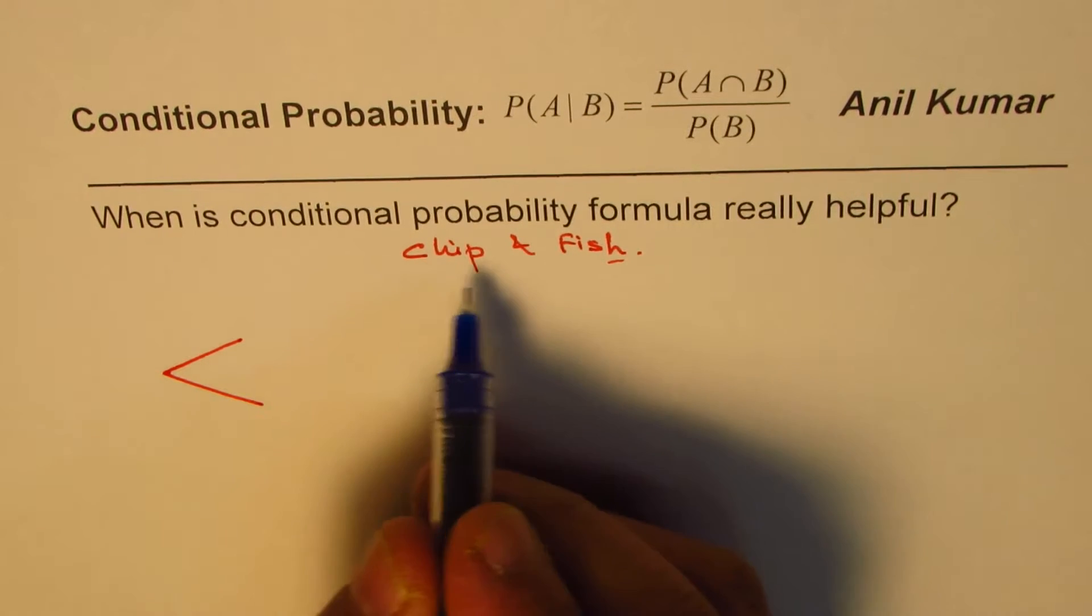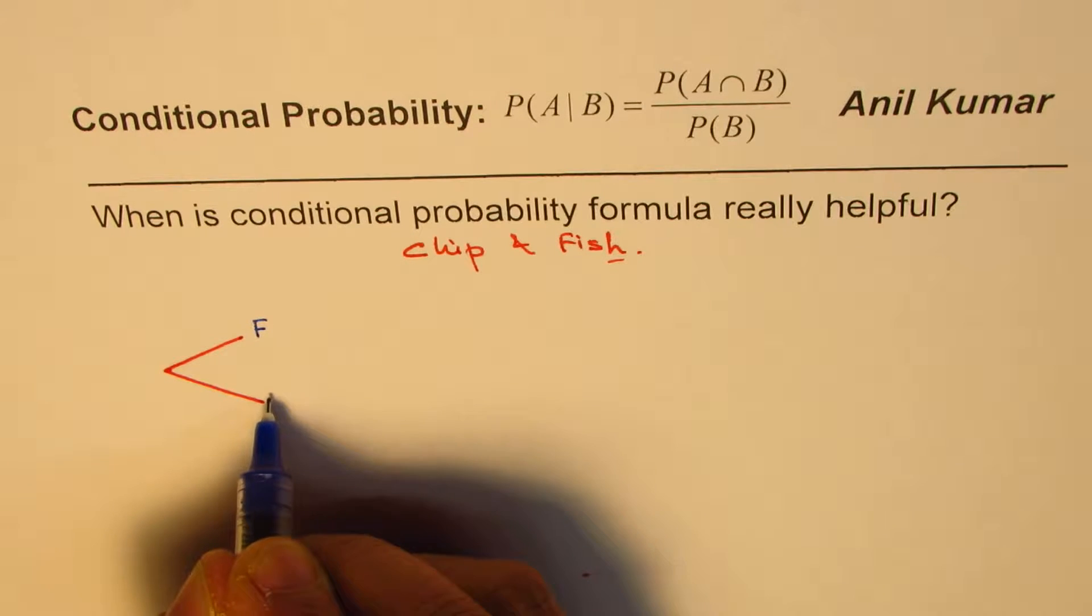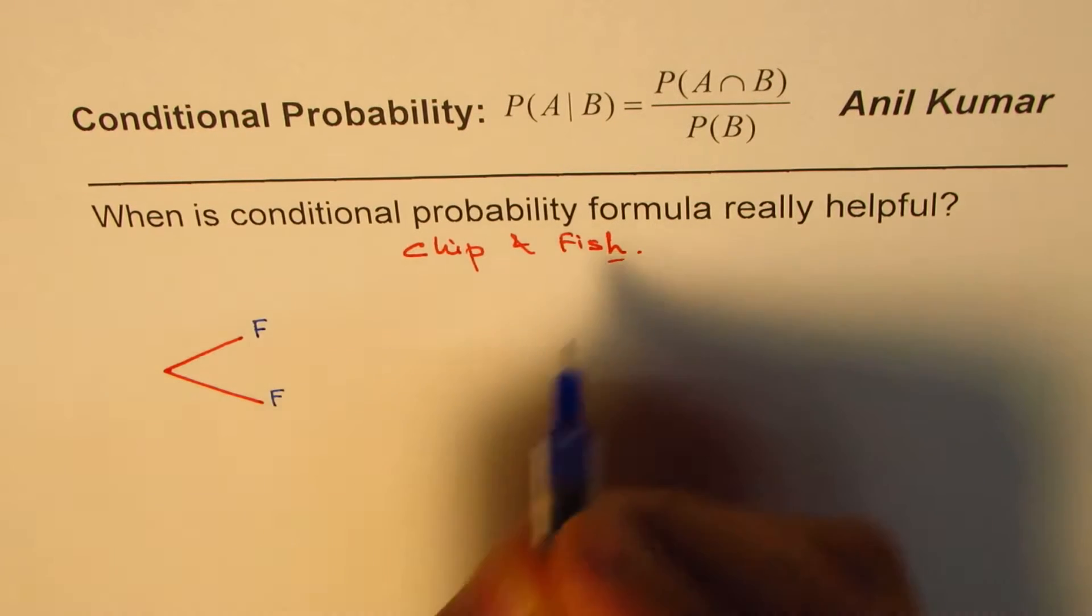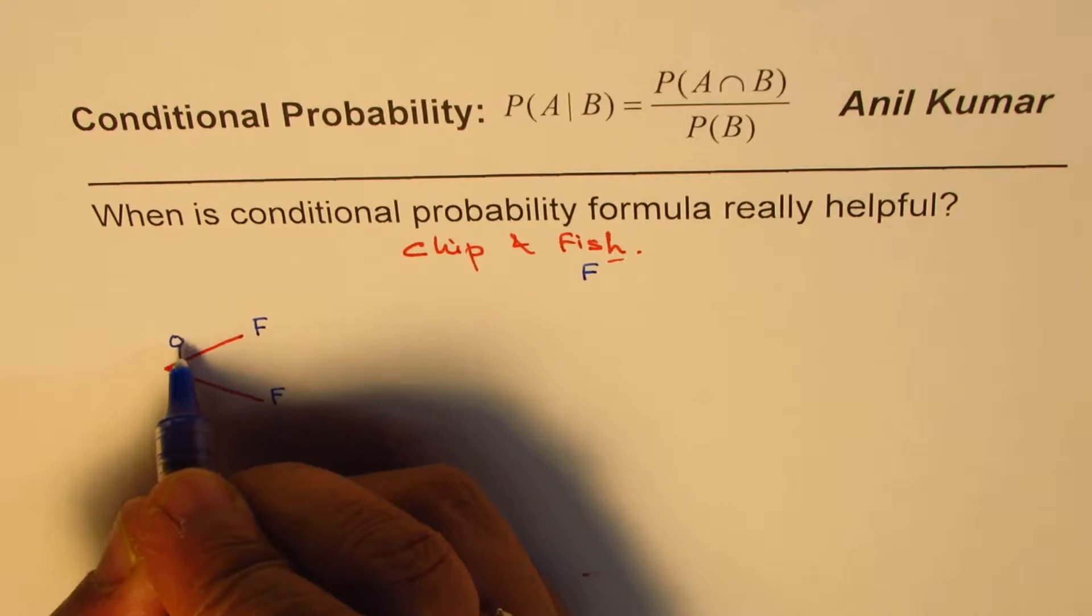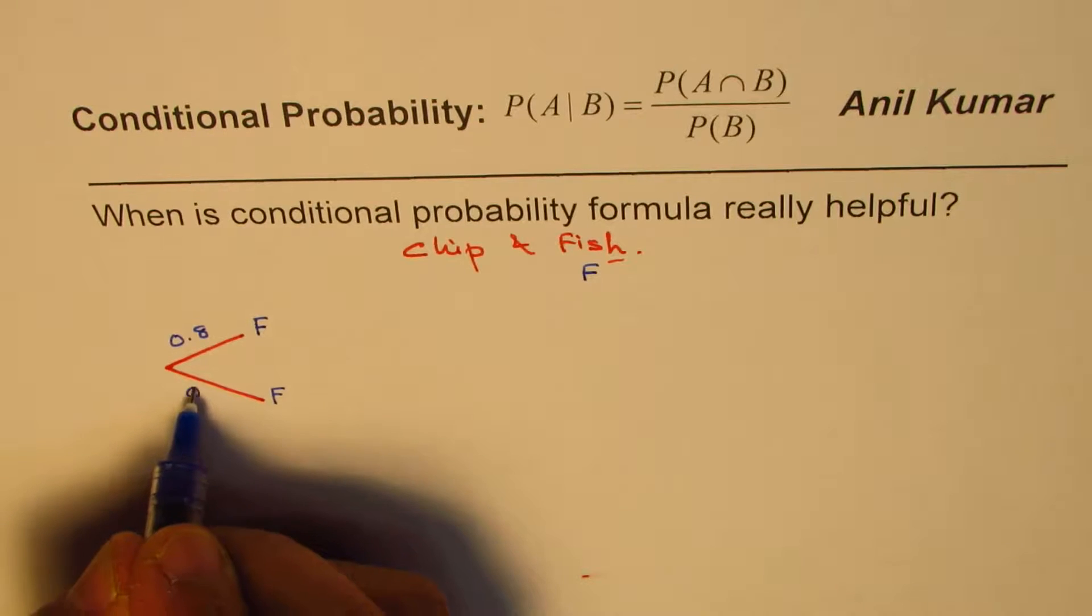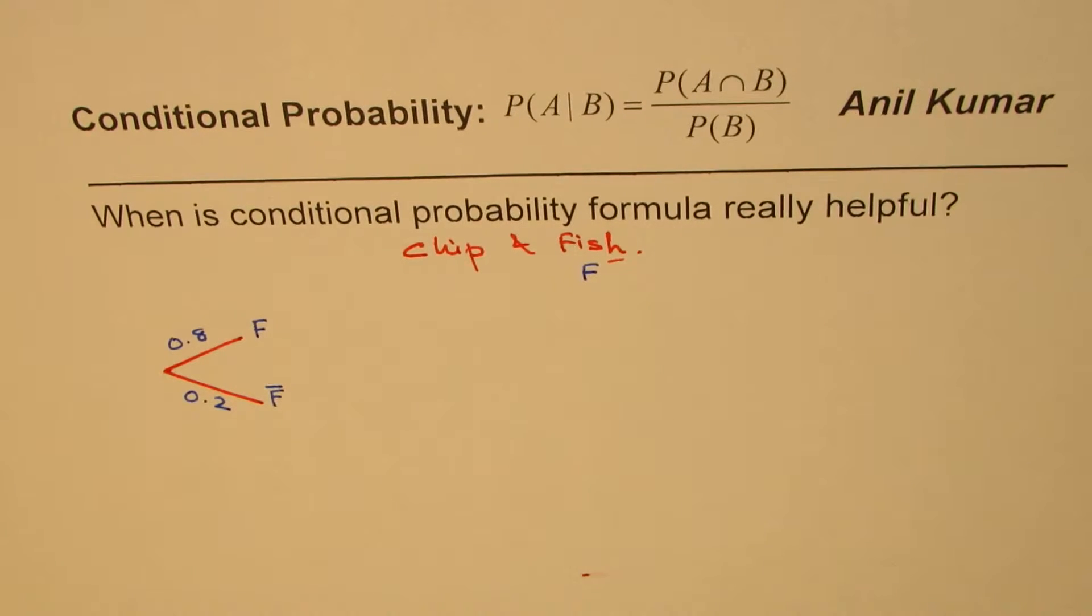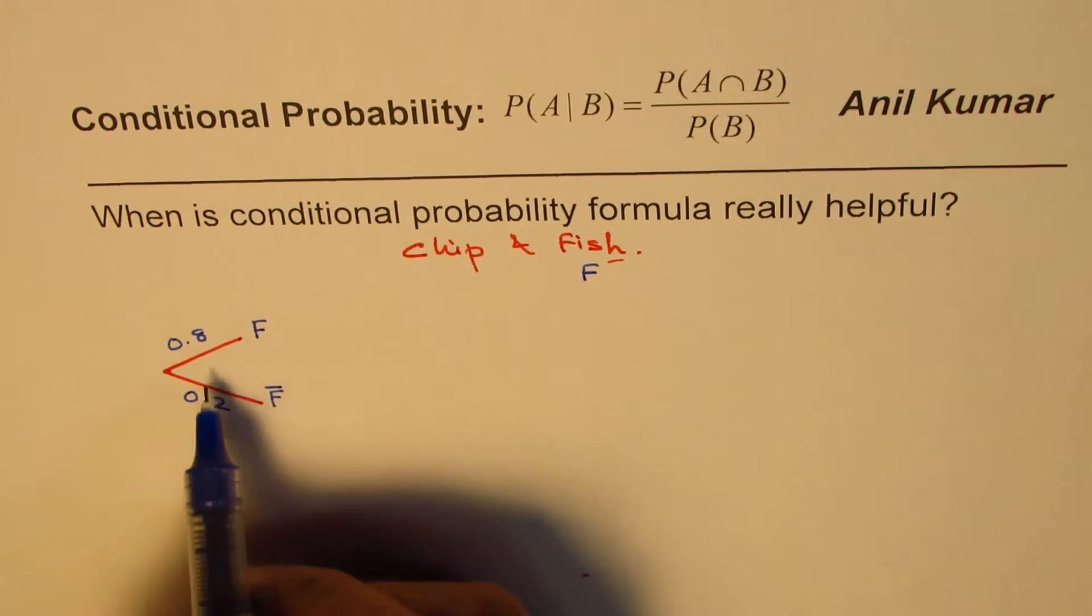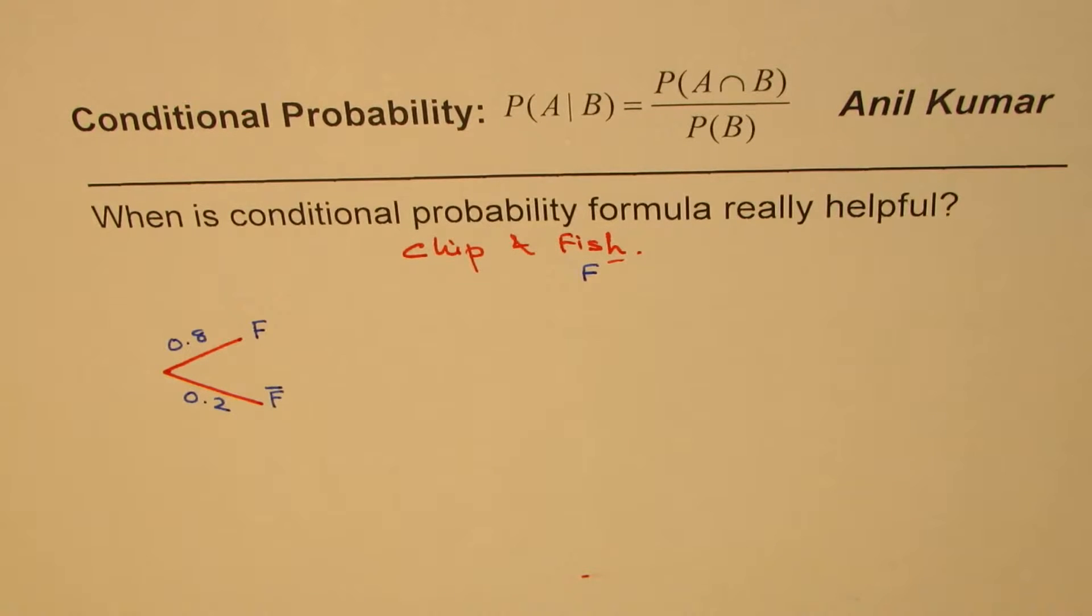Now, as far as the probability goes, we can say that almost 80% people will order for fish. So for fish, I am using F. 80% means 0.8. But 20% may not order for fish. So that is with a bar, the complementary of fish. So those who do not order for fish will be 20%.